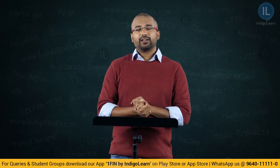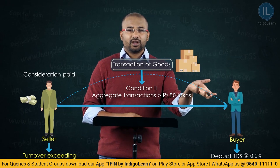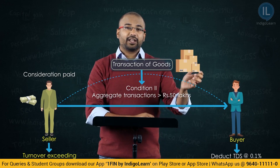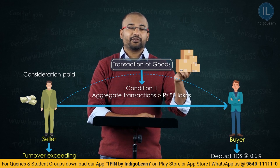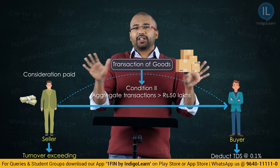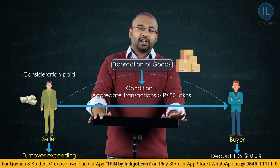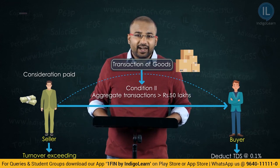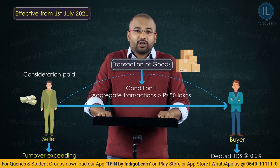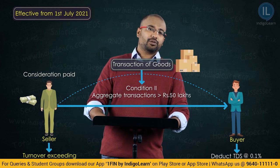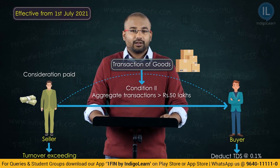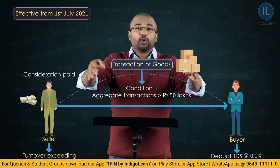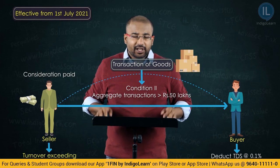To summarize Section 194Q: if there is a buyer who has done a turnover exceeding 10 crore, and he is buying from the seller an aggregate value of goods greater than 50 lakh, such excess will be subjected to TDS of 0.1%. One thing to note: this section was inserted from the 1st of July 2021. So prior to 1st July 2021, if the transaction exceeded 50 lakh, we are not concerned because the section came into existence only from that date.